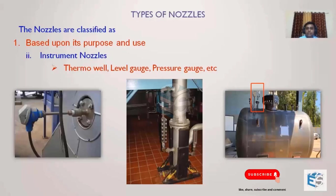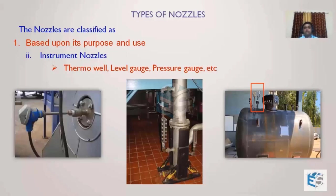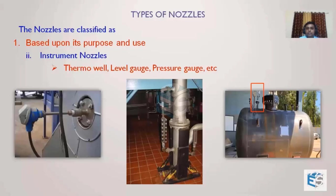To summarize, based upon purpose and use, nozzles are classified into three types: first, the process nozzle — the most critical — which carries fluid at temperature and pressure, and also transfers thermal expansion loads from the piping through the nozzle to the shell junction and end connections. Second, access openings or access nozzles through which a person can access the inside of the vessel. Third, instrument nozzles which connect to instruments such as level gauges, pressure gauges, or temperature elements.